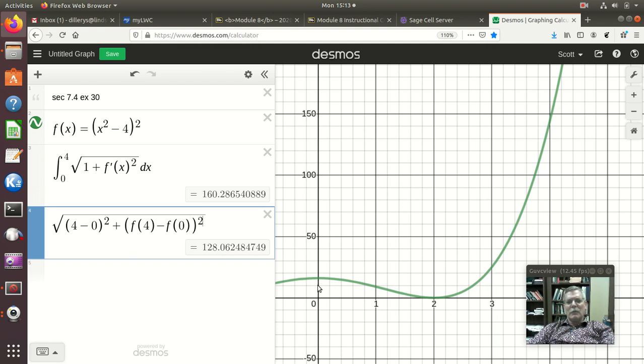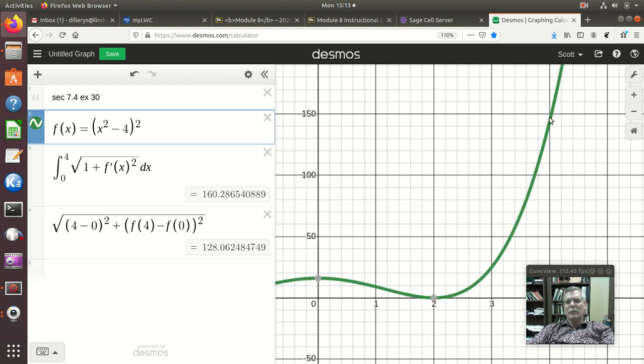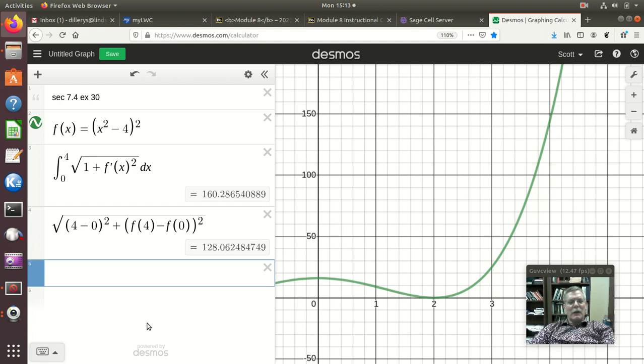And we get an answer of 128. We could see those points, we could plot them and so forth. But notice the straight line going there. It looks like, yes, it would be a lot shorter than this curve. Okay, so that's part A.